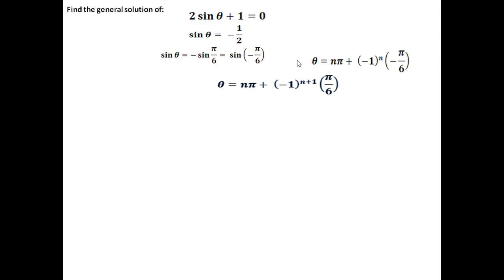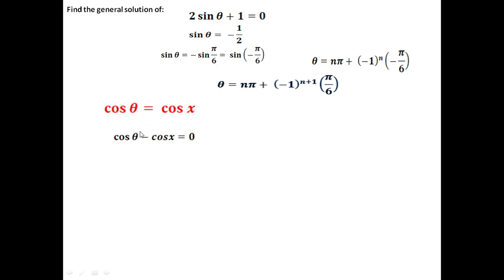So the general solution for 2 sin θ + 1 = 0 is θ = nπ + (−1)^(n+1) · π/6. This is a very important concept for Class 11. Now let us proceed to the general solution of cosine. For that, let us consider cos θ = cos x. This equation can be rewritten as cos θ − cos x = 0, and we are going to utilize the formula: cos α − cos β = −2 sin((α + β)/2) · sin((α − β)/2).